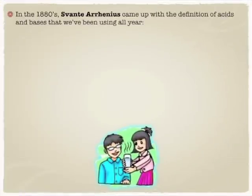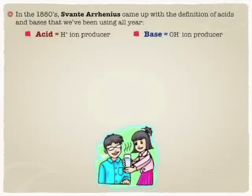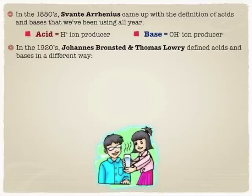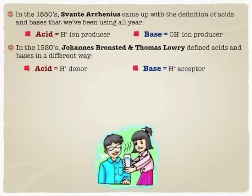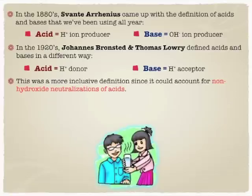Way back in the day, we talked about Arrhenius saying that acids are things that donate protons, and bases are things that donate hydroxides. A little later, Brønsted and Lowry came up with a slightly different way of looking at it. They still looked at acids as proton donors, but they said a base can be anything that accepts a proton. And that was a more inclusive definition that allowed for things beyond hydroxide to act as bases. Though a lot of people think of bases as just hydroxide, there are other things that can take a proton out of play and hence neutralize the acid.